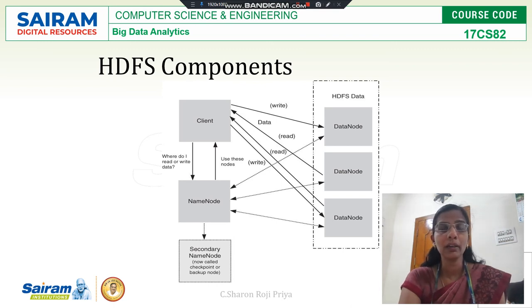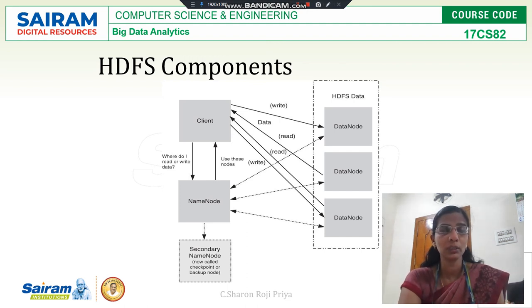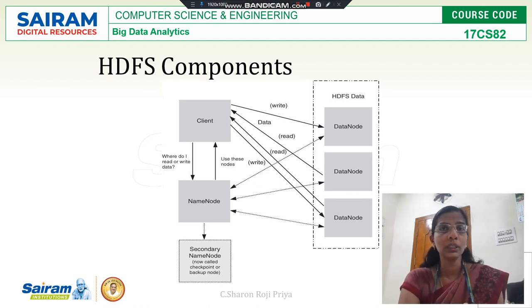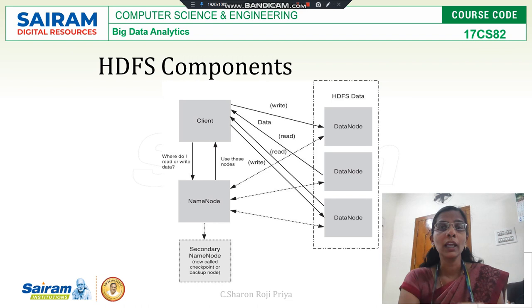If the client wants to perform a read operation, the client first approaches the name node. The name node gives the best data node location — this information is the metadata. Once the client receives this metadata, it goes to the corresponding data node and accesses the data. For a write operation, the client also approaches the name node first. The name node decides the number of blocks needed, finds the corresponding data node, and gives that information to the client. The client then goes to the corresponding data node and performs the write operation. This is the working procedure for read and write operations by the client.